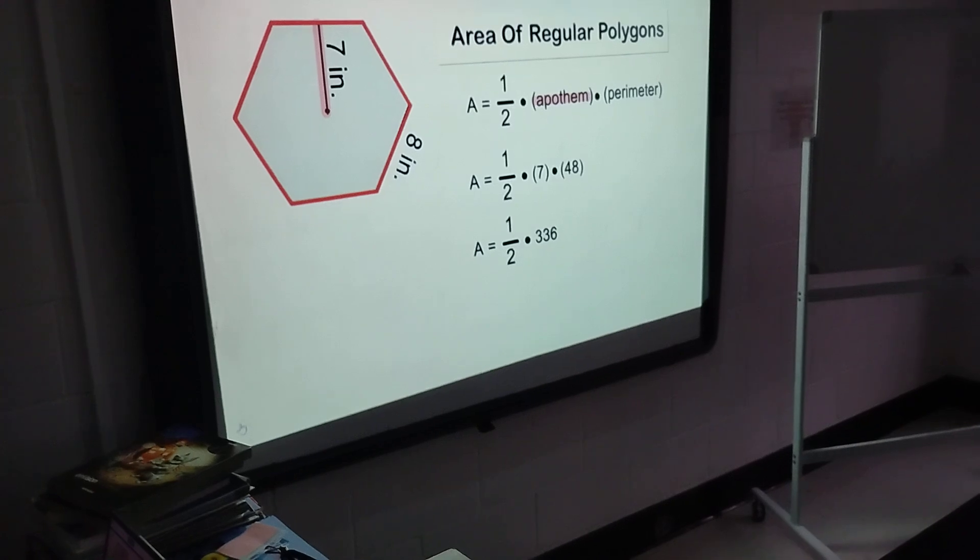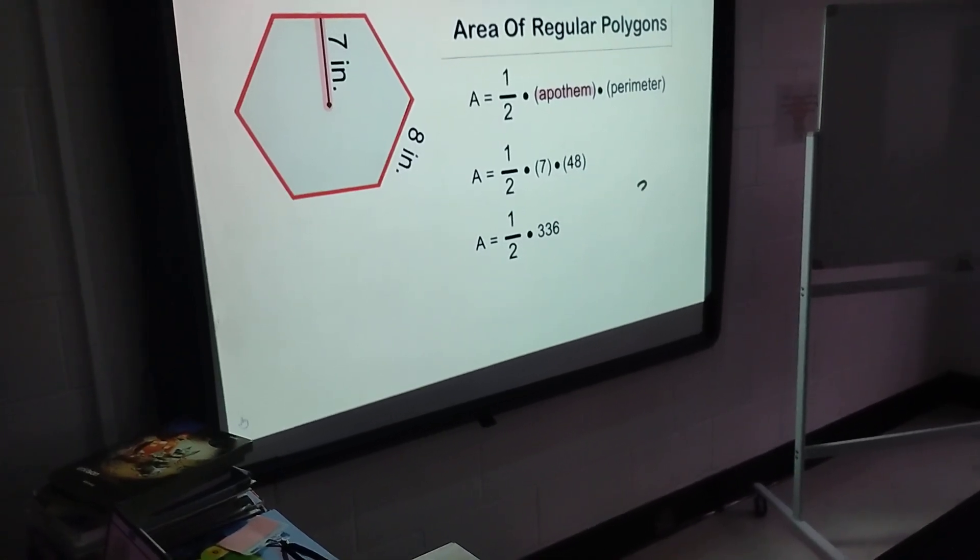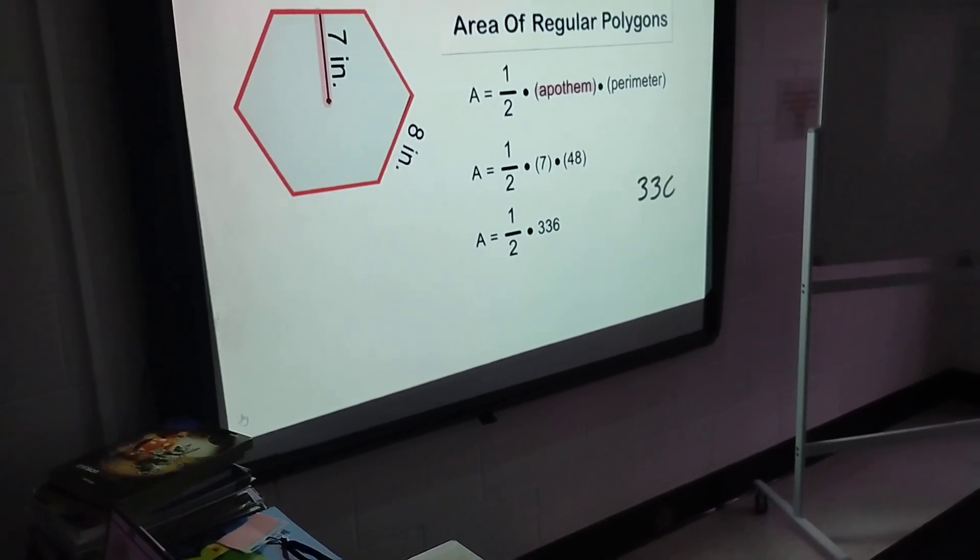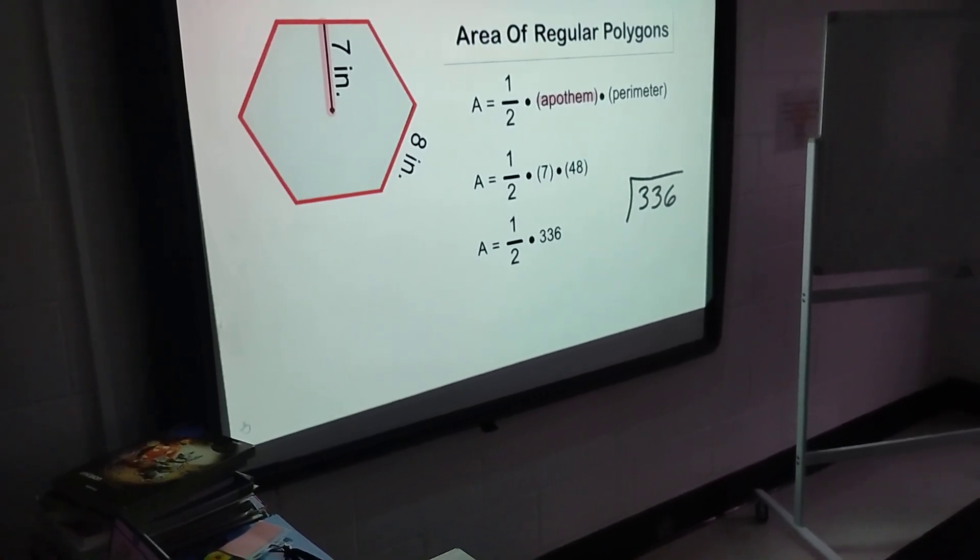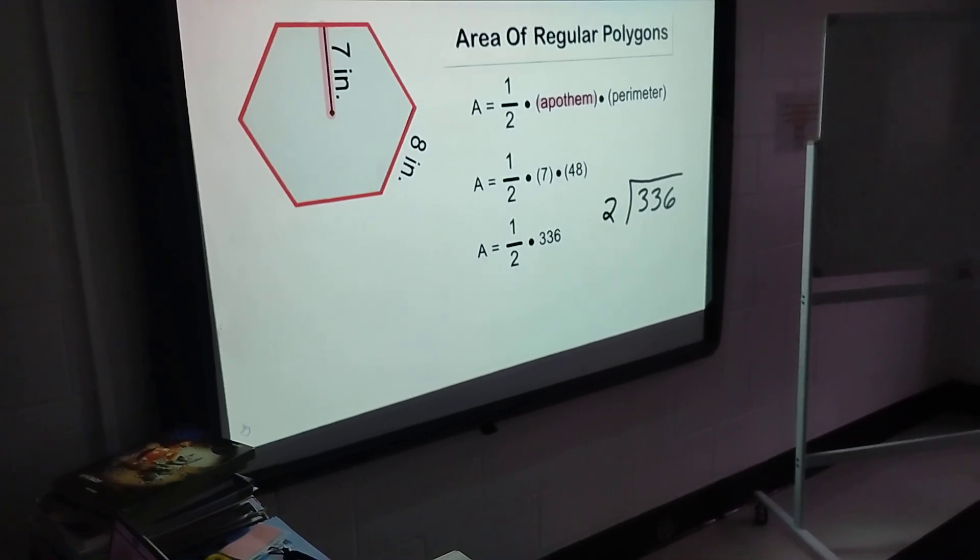Multiplying any number by one-half is the same as dividing by 2. So we take 336 and divide by 2, which will give us the area of our hexagon.